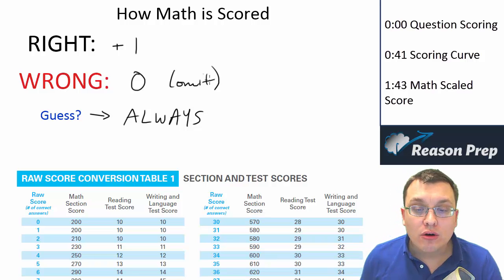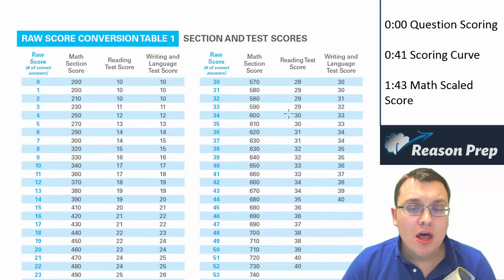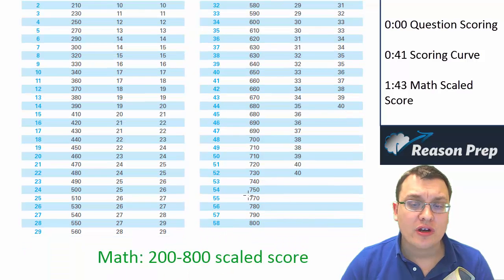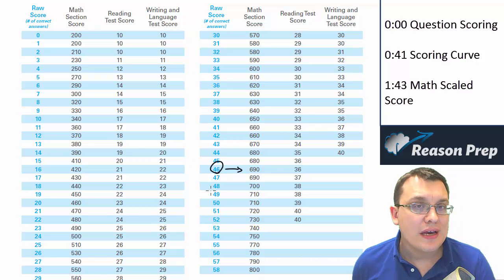Once you get your raw score, remember there are 58 total questions so it's out of 58. They would take the raw score, go to a table that looks like this, and then you can get the scaled score based on the table. So for example, let's say you got 46 questions right, that would be equal to a 690.